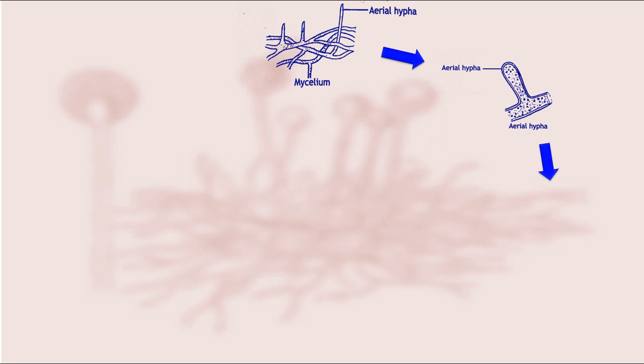In the vesicle, dense cytoplasm and many nuclei occupy the peripheral region while a few nuclei with vacuolated cytoplasm occupy the central region.